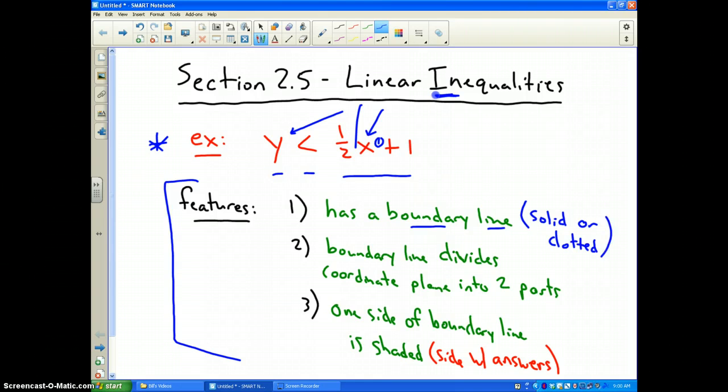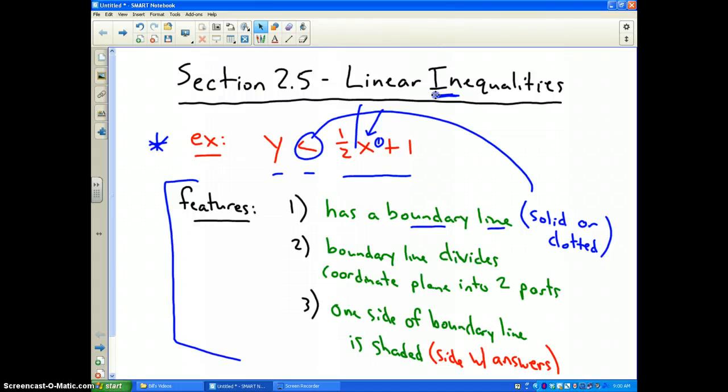...depending on this symbol right here, which was less than. If that symbol is either less than or greater than, it will be a dotted line, and if it's less than or equal to or greater than or equal to, it would be a solid line.